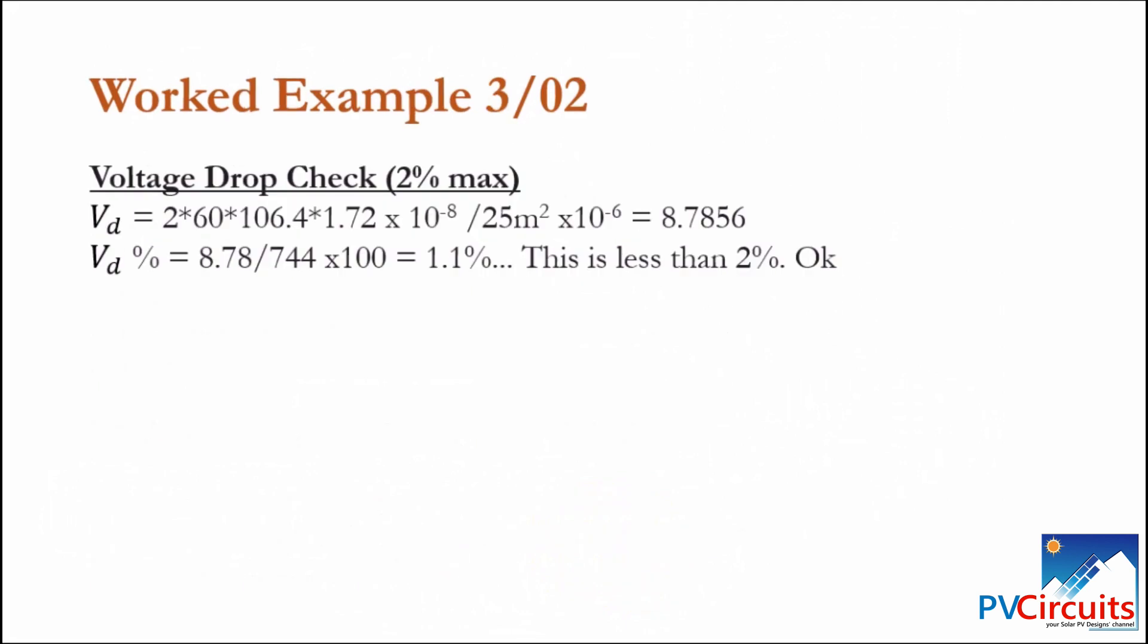Using these values, we can now calculate the voltage drop. If we put in the figures in the equation for the voltage drop, we end up with 8.79, roughly, and the percentage now is this figure divided by the system voltage, which is 744, times 100, and this gives us 1.1 percent. This is good for that section, because the voltage drop is just 1.1 percent, against the limit, which is 2 percent, and this is okay.